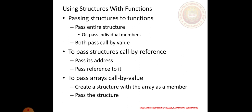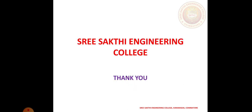When using structs with functions, you can pass the entire structure or pass individual members. Pass by value passes a copy of the structure. To pass a structure by reference, pass the address of the structure. You can also pass an array of structures by value, which creates a structure with an array as a member and then passes the structure.